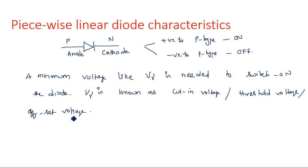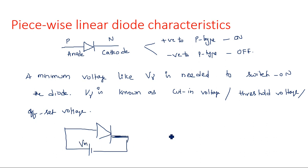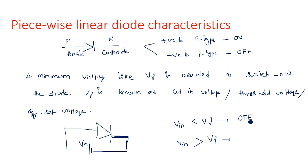Now let us see the characteristics of the diode. When input voltage is less than V-gamma, the diode is in the off state — there is no flow of current, only minority charge carrier current flows. When input voltage is greater than V-gamma, the diode comes into the on state and forward current flows. This is the general scenario for a PN junction diode with respect to the cut-in voltage V-gamma.